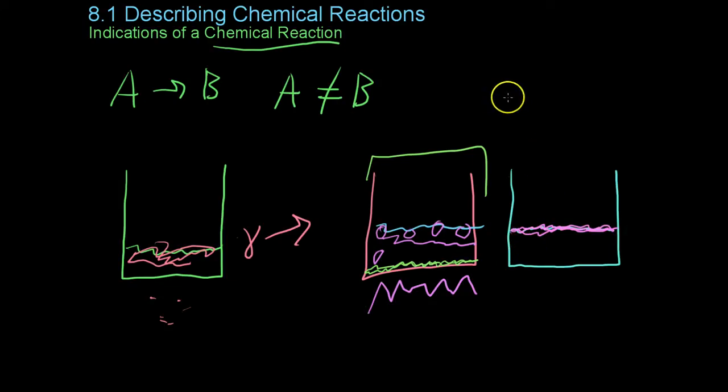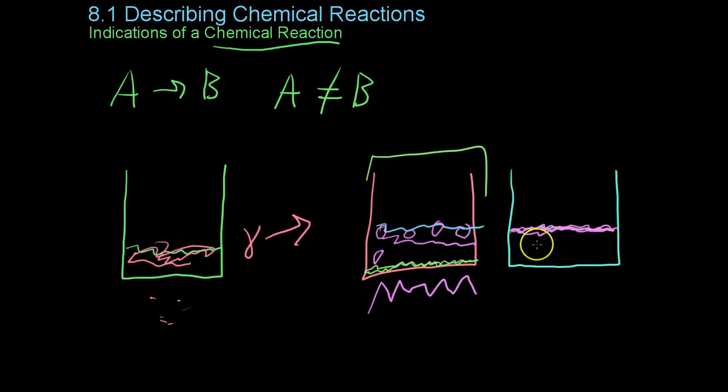Because, as you'll remember, different compounds absorb and release light at different quantum energies, like we discussed in the Bohr model. So if you're seeing a different color, you're seeing a different frequency of light being released by the material, which means you're seeing a different material altogether.